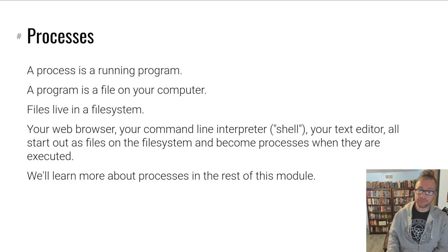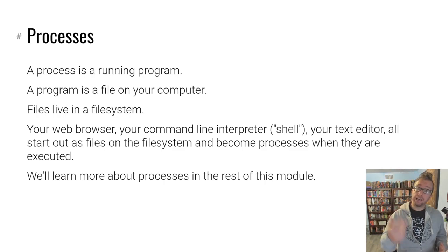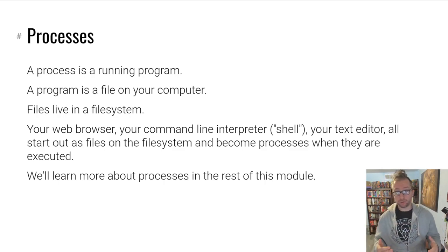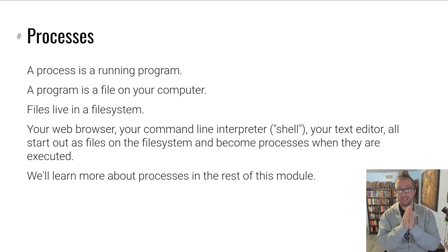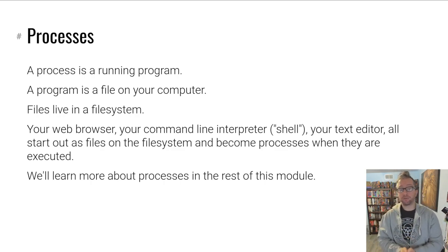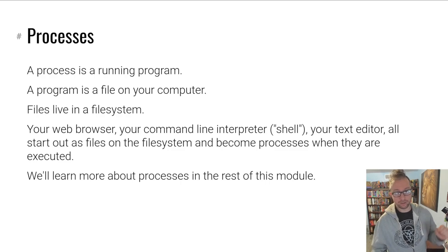We'll skim over processes quickly because they'll be the subject of future videos in this module. A process is a running program, and a program really is a file on your computer — cat exists somewhere in an executable file. These executable files live in a file system, so your web browser, every file on your computer, lives in a file system. We'll cover the executables themselves in depth in future videos.